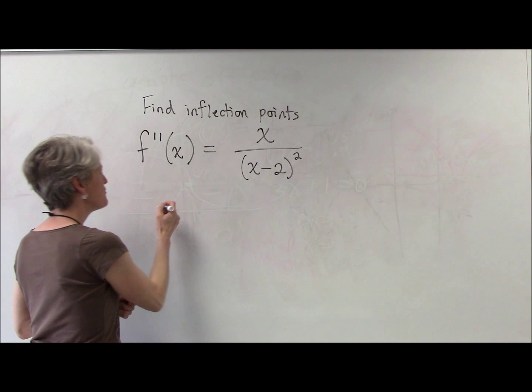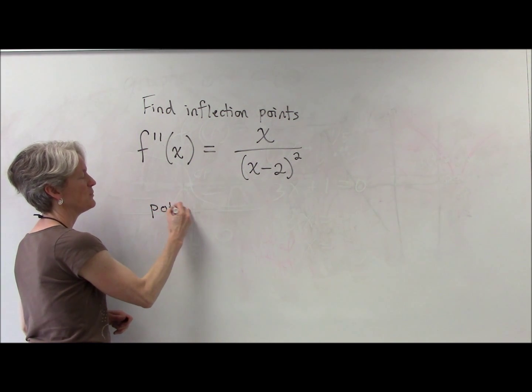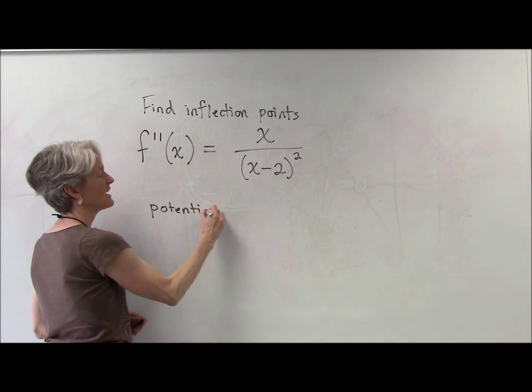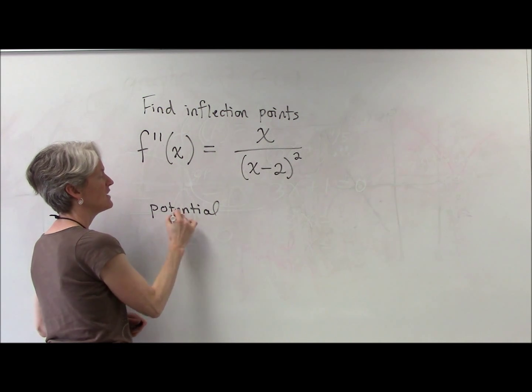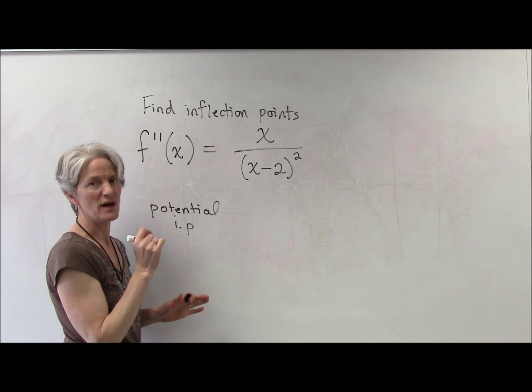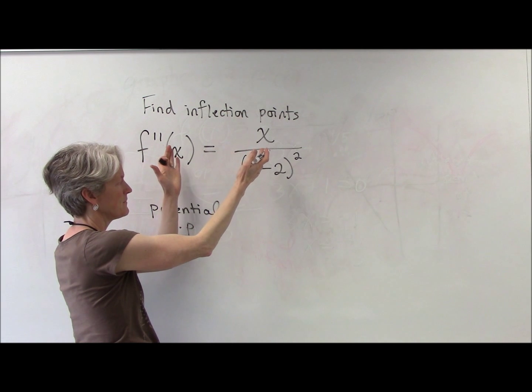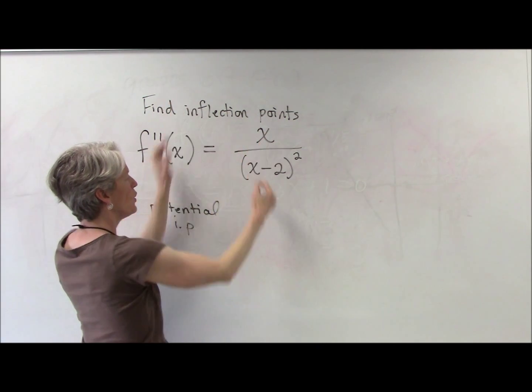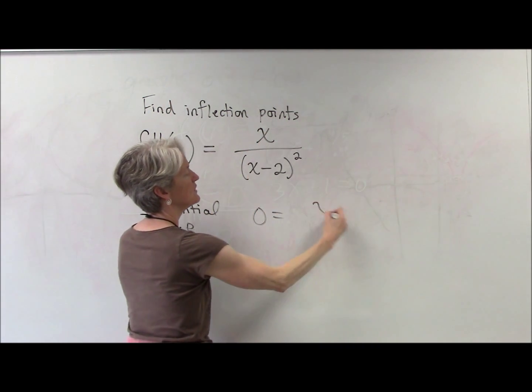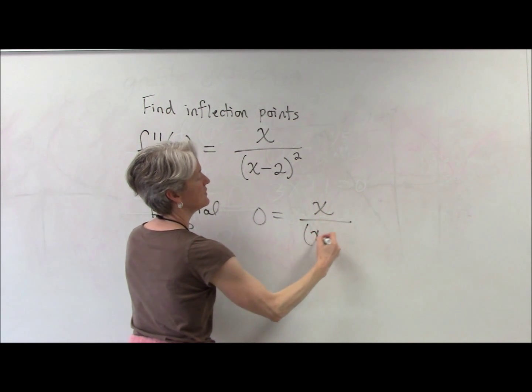All right. So we have potential inflection points when the second derivative is zero or undefined. So let's look at that first. When could this whole thing equal zero? Well, let's just set it equal to zero.